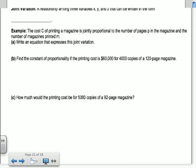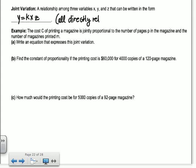Okay, joint variation. So this is a relationship between three variables, x, y, and z, that can be written in the form y equals k times x times z. Okay, so all of them are directly related. So they're all on the same line. You don't have any divided bys. Okay, so here's an example of that.